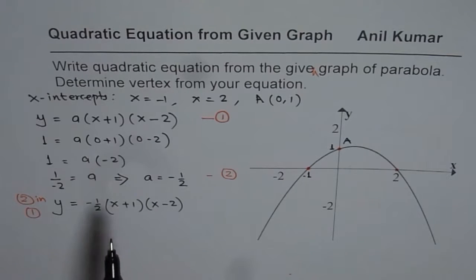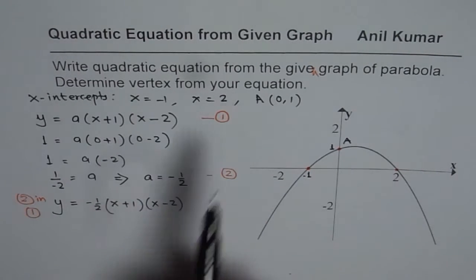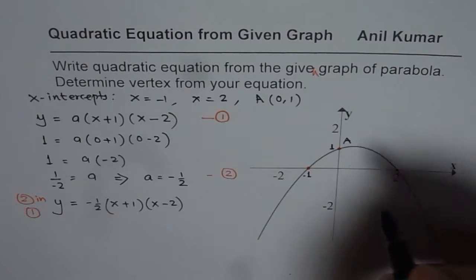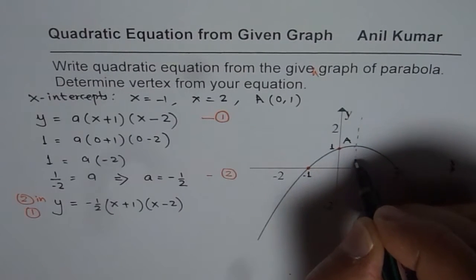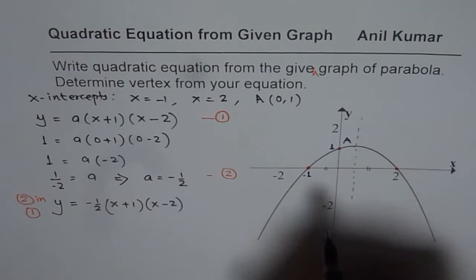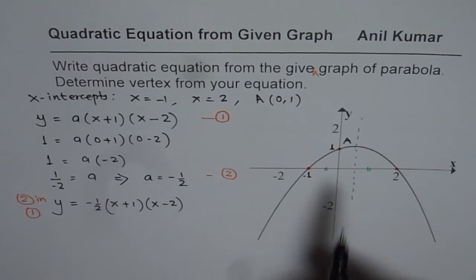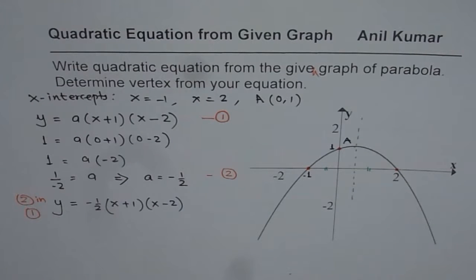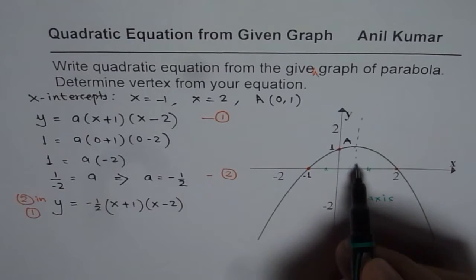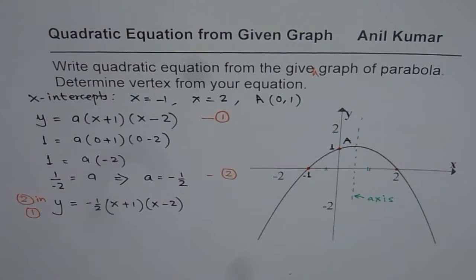Now, we need to find vertex from this equation. Now where is the vertex? So in the graph somewhere here is the vertex. Vertex is the midpoint. So vertex will divide the distance between the two x-intercepts equally. So we can find this axis. Let us find this axis. And then using that x-value, we can find the y-value of the vertex.